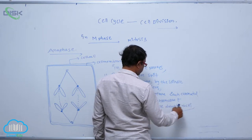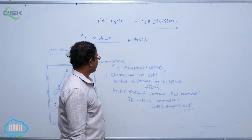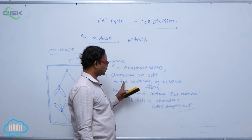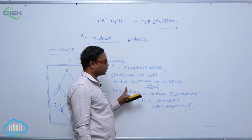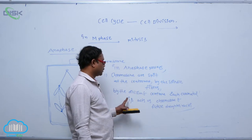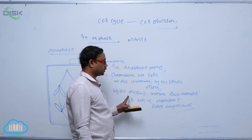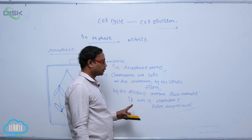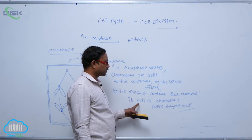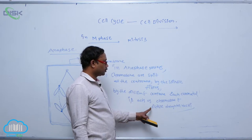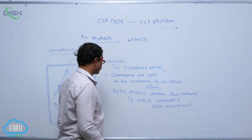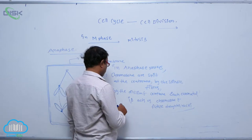In the anaphase process, chromosomes are split at the centromere by the spindle fibers, by the division of the centromere. Each chromatid acts as a chromosome of the future daughter nuclei.